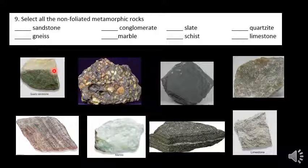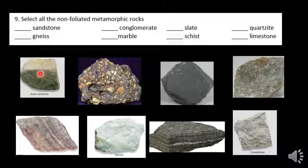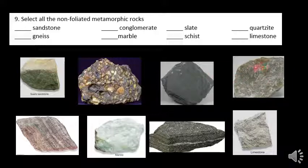First, we have quartz sandstone. Sandstone's not metamorphic — quartzite would be. In fact, we see quartzite over here. Sandstone actually turns into quartzite. Sandstone and sand are made of quartz, and they are lithified — compacted and cemented. But if you put them under a lot of pressure, you squeeze those quartz grains together and it doesn't feel like sandpaper anymore; it's actually fairly smooth. They call that quartzite. So we would check quartzite over here.